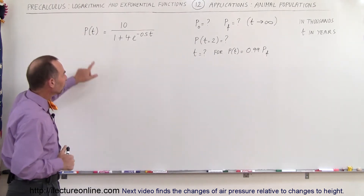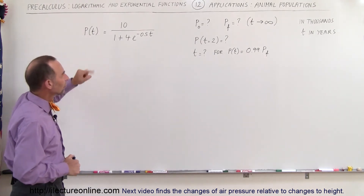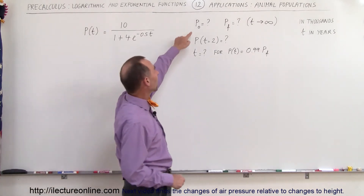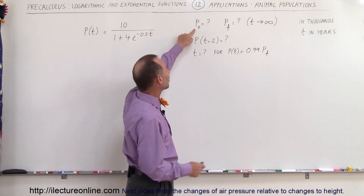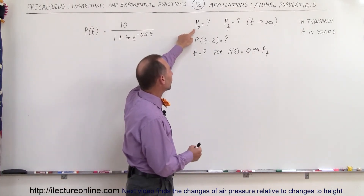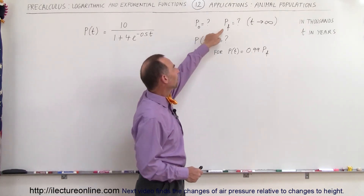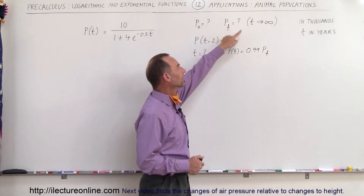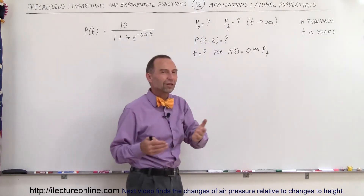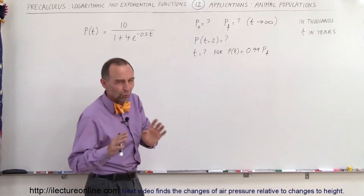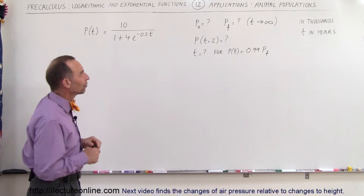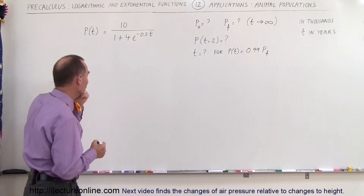To get a feel for the equation, we're going to find the population at time equals zero, and the population it will end up with when time goes to infinity — or more precisely, when time becomes very large, since time doesn't really go to infinity.